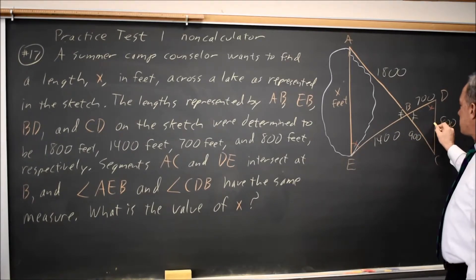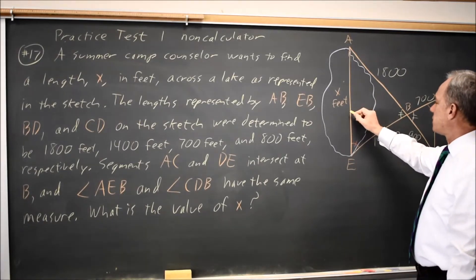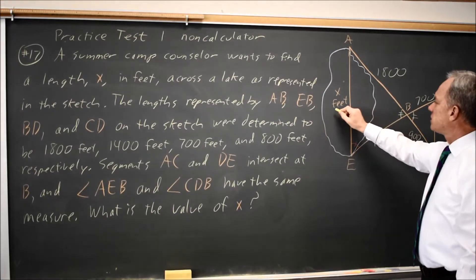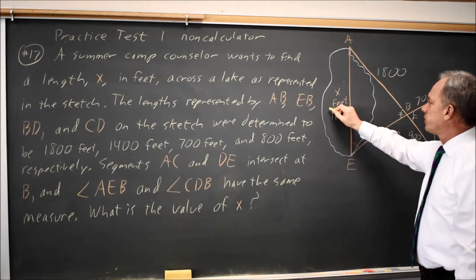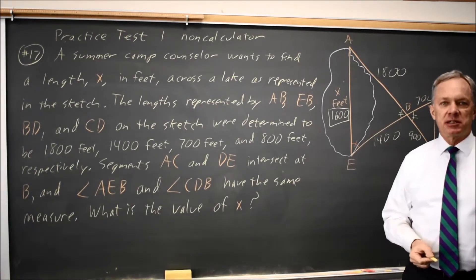Since the short side CD is 800, the long side AE will be twice 800, because all corresponding sides are in ratio 2 to 1. So this is 1,600 feet. And their question was, what is the value of x? And x would be 1,600.